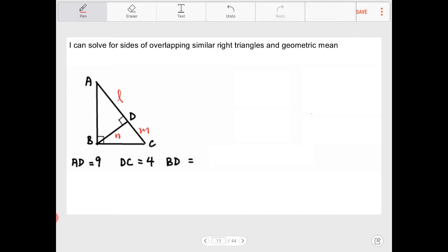Therefore, I'm looking at AD is equal to 9, that's our L, so that's 9, times DC, that's our M, which is 4, is equal to BD, which is what we're looking for, which I don't know, so I'm going to call that N. So wait a minute. N squared is equal to 9 times 4.